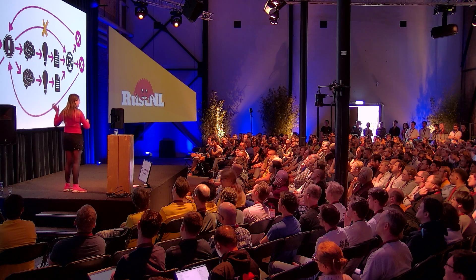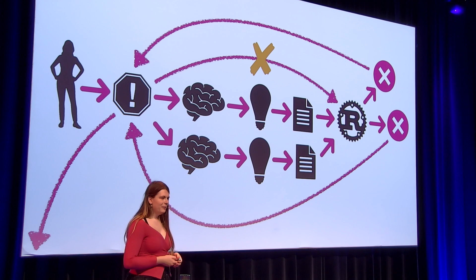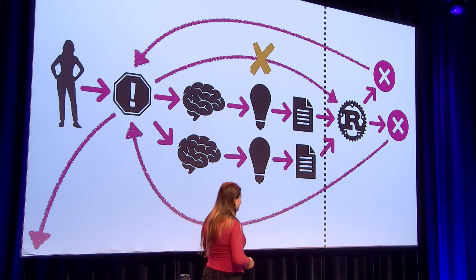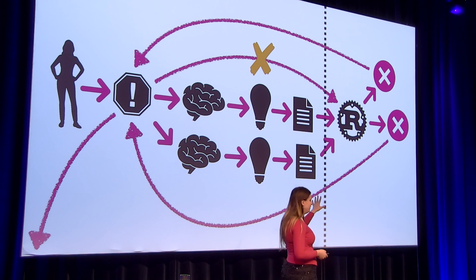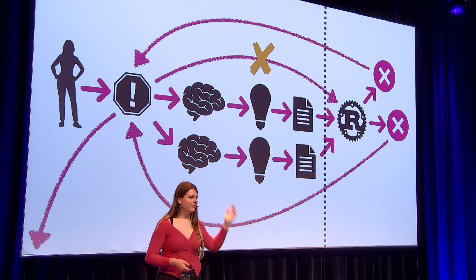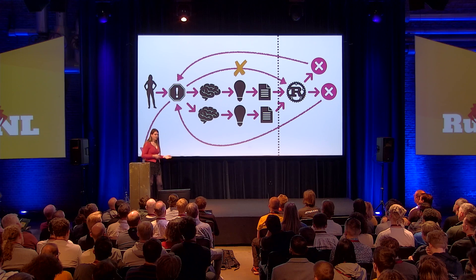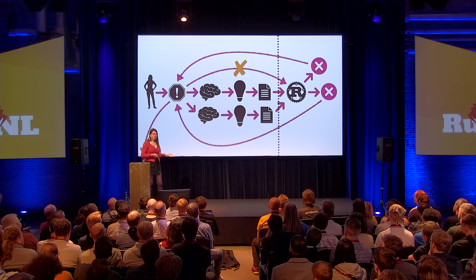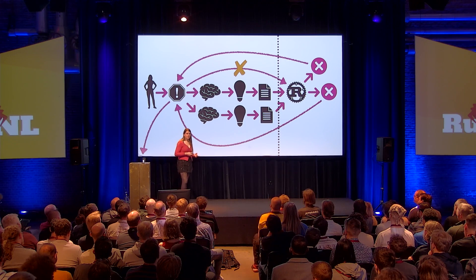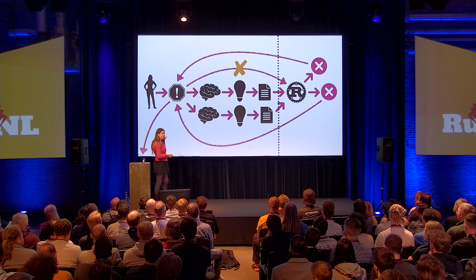This slide represents frustration that quite a lot of people have experienced. The problem is this dotted line — everything on the right side happens inside the Rust project, but everything on this side happens outside of it. You might be able to talk about it with project members, maybe on blog posts, maybe on a whiteboard at your office, maybe just in your head — but it is not coordinated by the Rust project. So every time you come with a solution and it gets rejected, you get thrown over this wall and you're on your own again.